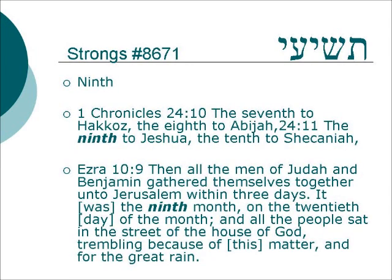The ordinal number is pronounced She'i, and it just means ninth. 1 Chronicles 24:10-11: 'The seventh to HaKoz, the eighth to Abiyah, the ninth to Yeshuah, and the tenth to Shekinah.'